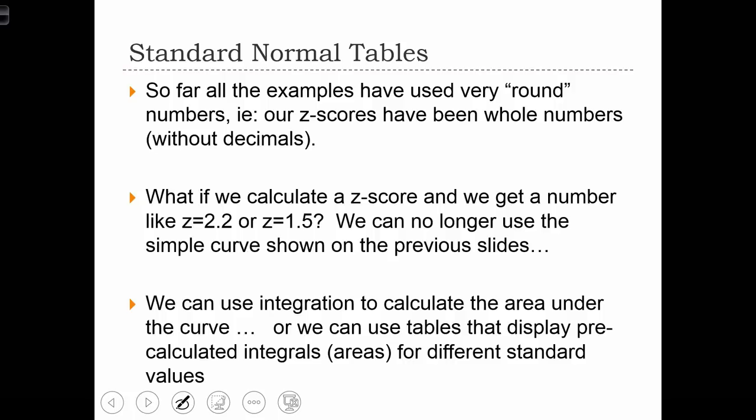So far, the examples we've seen with house prices have been constructed so that the z-scores have all been very round numbers. We've either been looking at z-scores of 0, 1, 2, or 3. But in reality, if we wanted to ask a question about a housing price, it's very often the case that when we convert that house price to a z-score, we don't get a round number at all. We get a decimal number, like 2.2 or minus 1.5. In that case, we can't use that simple curve that we've seen on the last two slides.